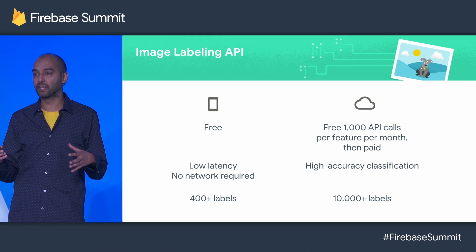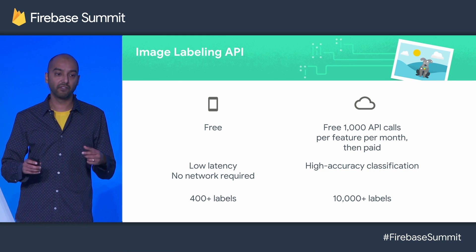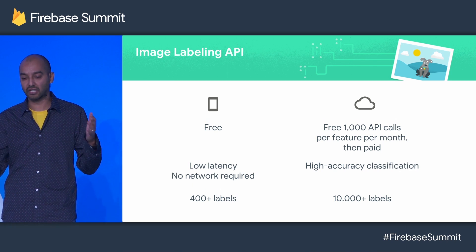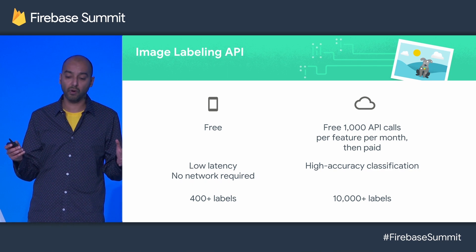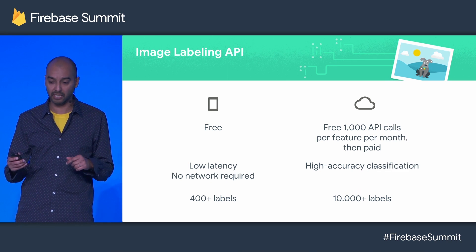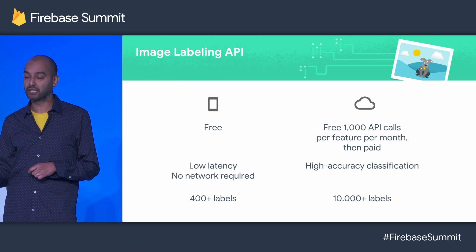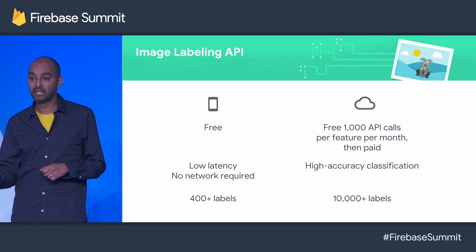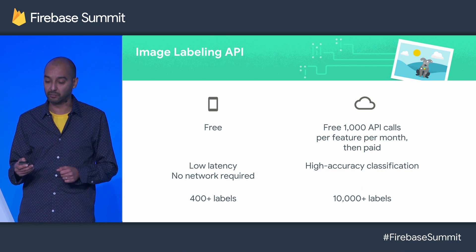The Image Labeling API, like many of the other APIs in ML Kit, is available both on-device and in the cloud. On-device, it's free — you can use it as much as you want. It's low latency, there's no network connectivity required, and it does about 400 or so labels. The cloud version of the API offers 1,000 free calls per month, and then it's paid after that, but it offers higher accuracy classifications and can do around 10,000 labels.